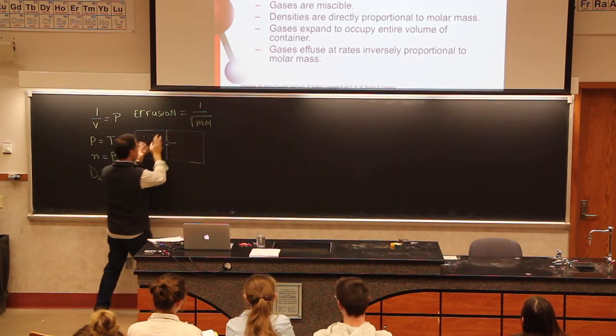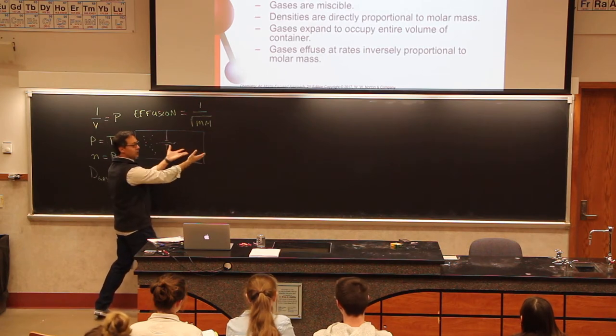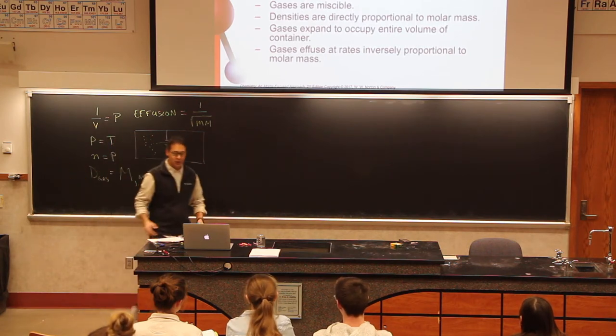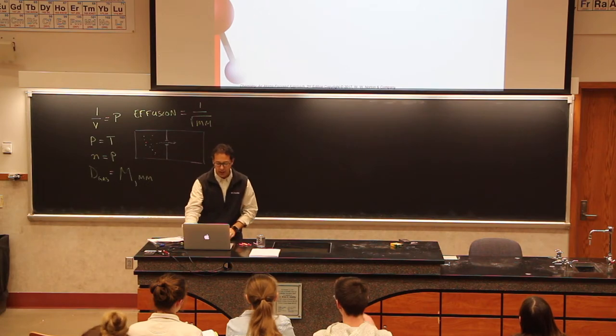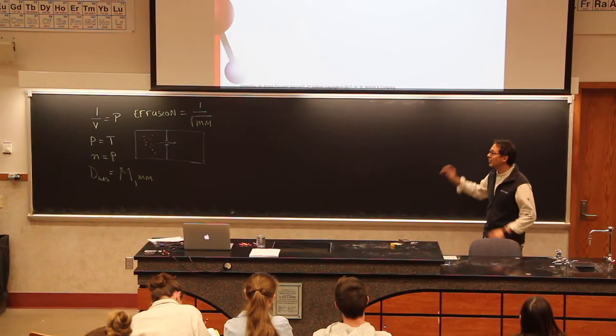Over time gases will diffuse and they will also effuse. It's just random motion. So we have these rules about gases. Now if gases follow the rules all of our math works. The problem is they don't always follow the rules. We'll talk about examples when they don't do that. But these are the five rules.